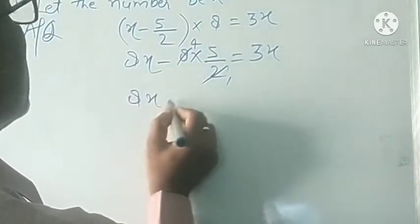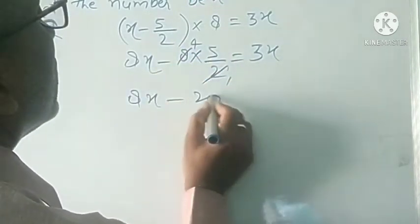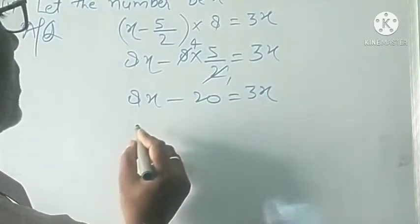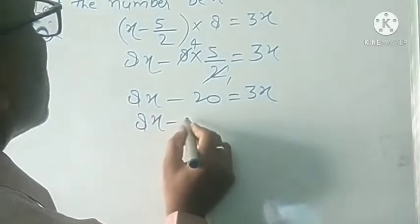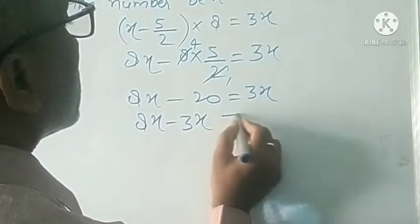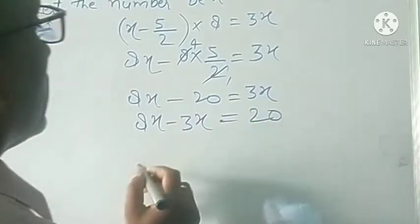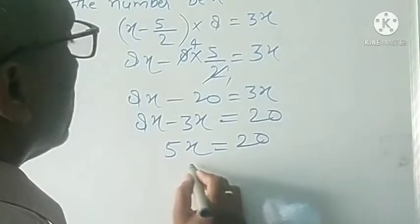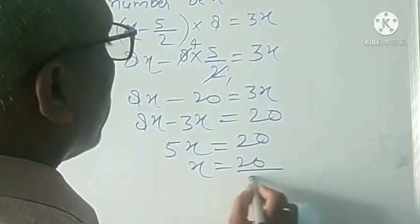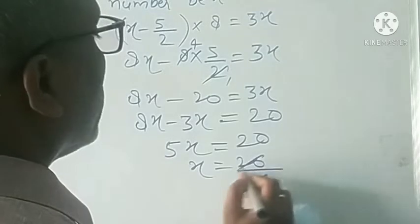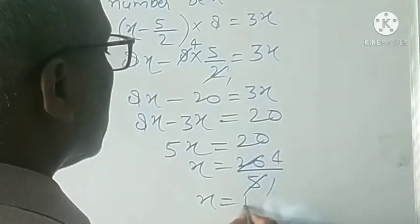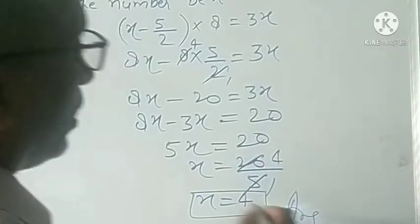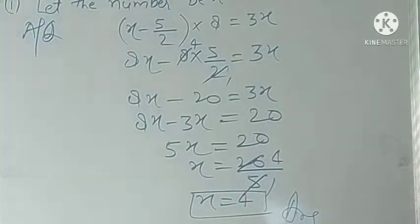You get 8x minus 20 is equal to 3x. Then you transpose x to the LHS. You get 8x minus 3x is equal to 20, that is 5x is equal to 20. Then x is equal to 20 upon 5, which gives x is equal to 4. It is your answer — the required number is 4.